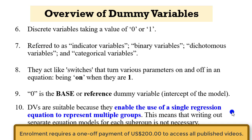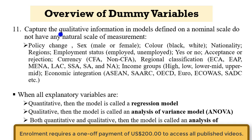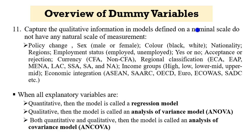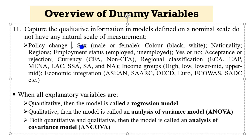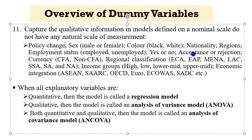This means that writing out separate equation models for each subgroup is not necessary. Dummy variables also capture the qualitative information in models defined on a nominal scale, but they do not have any natural scale of measurements. For instance, a policy change could have occurred within the period of the data you are working with. You may also be considering sex in your data, or color, or nationality, or perhaps regional classification, income groups, or economic integration.